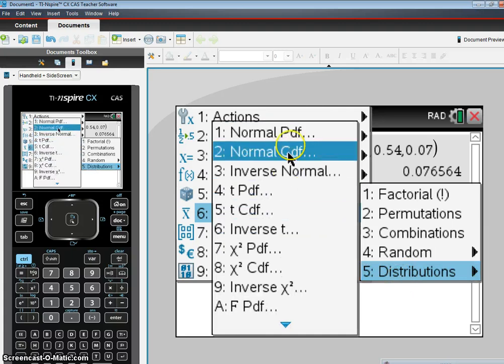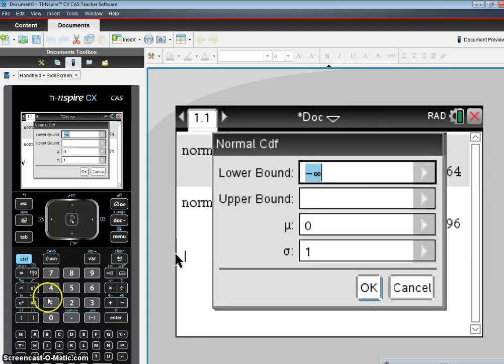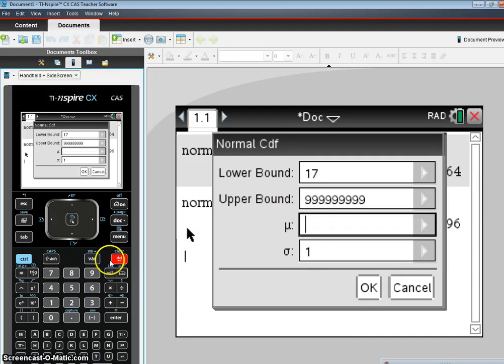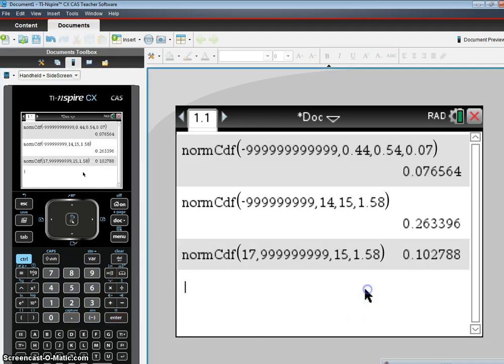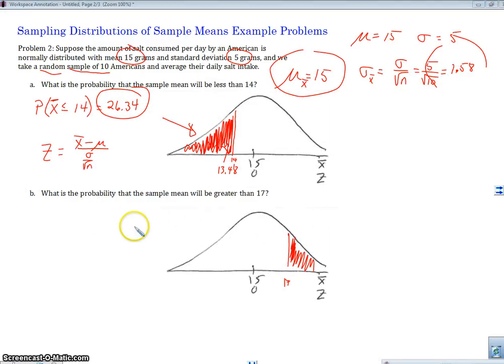Okay, so probability, distributions, normal CDF. This time our lower bound is 17. Our upper bound is 999999. Our μ is 15. And our standard deviation was 1.58. 0.1027. So we get 0.1028. Okay, or 10.28%. That's it.